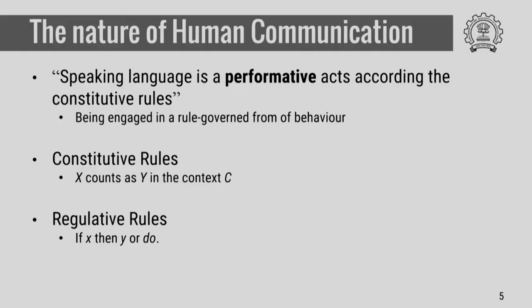Once the constitutive rule is formed, we need to talk about the regulative rules — how the rule works. The idea here is that if there is a rule, then the rule will guide us or motivate us to act in a particular way. For example, if I put an order, then the order has to be executed in a certain form. Saying 'please go out' — if that is an order, then the hearer just executes the action of going out. So it is in this context we broadly say that how meaning is defined as an institutional fact.